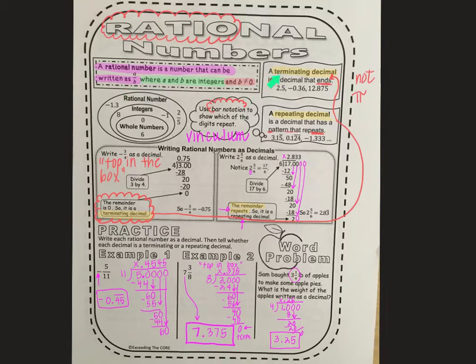We talked about the difference between terminating and repeating decimals. We talked about bar notation showing when things are repeating, and the vinculum is the name of that little bar.